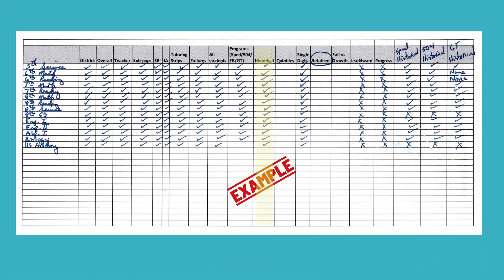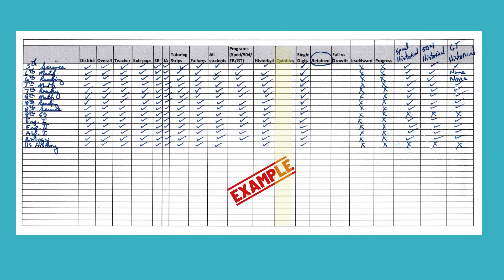Historically, how have we done on this assessment? Like if we took this assessment last year at the same time — an interim assessment — how did we do? If it's your state accountability at the end, how did we do at the end of last year and the year before that? If it's a CBA or just a mini assessment, historically, how has this class done on all of the other mini assessments? Quintiles is a lead-forward report — I'm going to leave it right there because that's a whole video in itself.